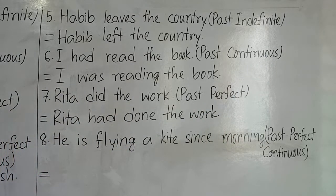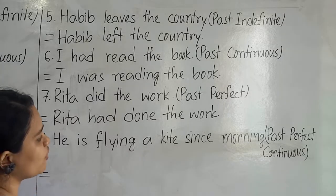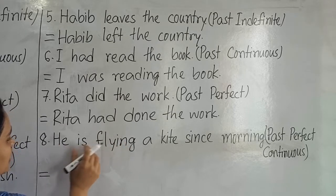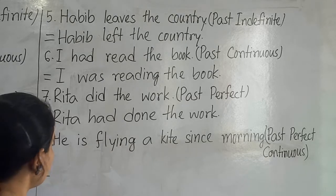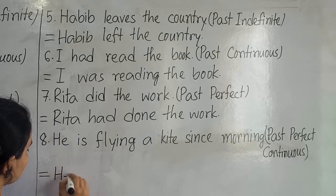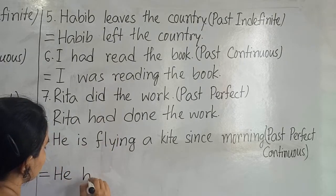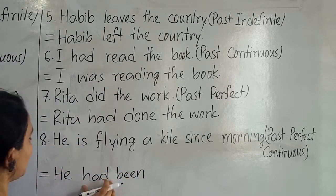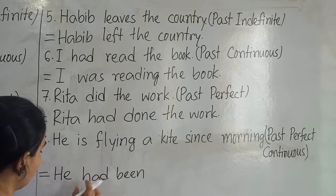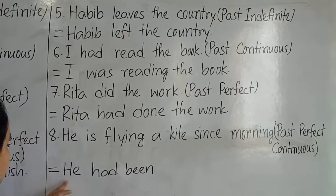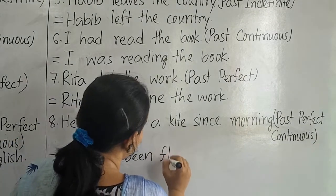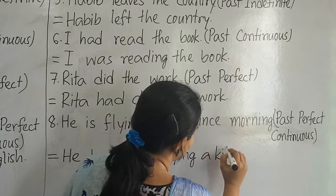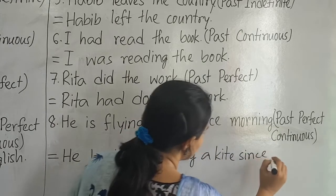Number eight: 'He is flying a kite since morning.' We will change it to past perfect continuous tense. After the subject there is 'is' and verb with '-ing', so it is present continuous tense. We will change it. Our subject is 'he' and for past perfect continuous tense we write 'had been' — we use 'had' after both singular and plural subjects. Then the verb with '-ing': flying. So: 'He had been flying a kite since morning.'